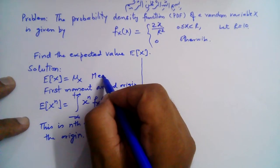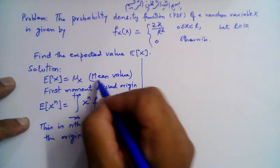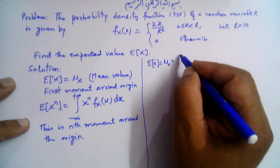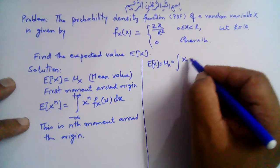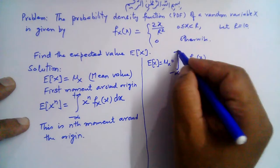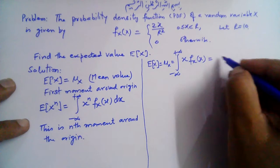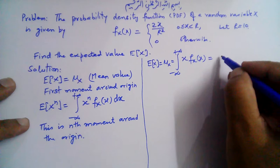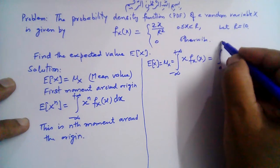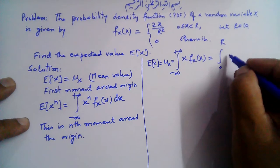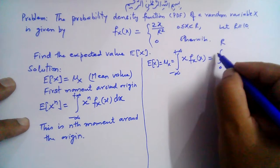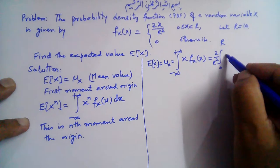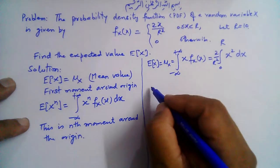The expected value of x, or mean value of x, equals the integral of x times f(x) from minus infinity to plus infinity. Since f(x) is 0 outside the interval, the interval of interest is only 0 to r, which equals 10. So this becomes the integral from 0 to r of x times (2 over r squared) times x dx, giving us 2 over r squared times x squared dx.